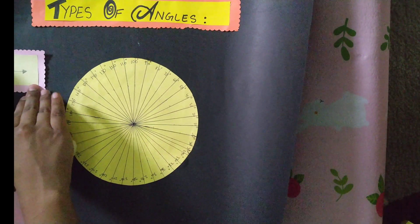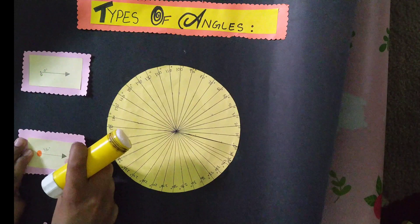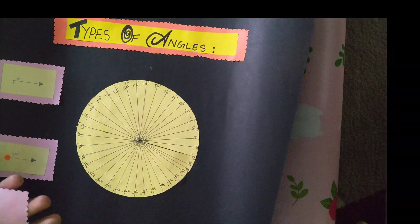And now let's start by pasting all of the project. First we're going to paste the heading types of angles, then all the angles on the side.